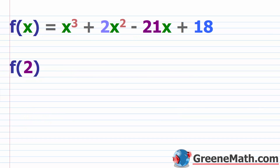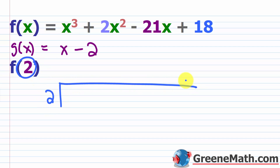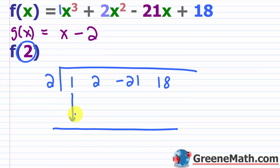To see a quick example, we have f of x equals x cubed plus 2x squared minus 21x plus 18. If we want to find f of 2, we can use synthetic division. The remainder from dividing by x minus 2 equals f of 2. So I put a 2 here and grab the coefficients: 1, 2, negative 21, and 18. Remember, if you're missing a power of x, put a zero as a placeholder. Draw a little bar, drop this down, and get started.